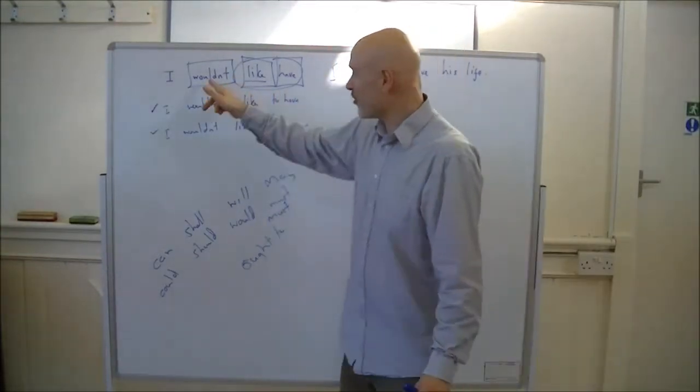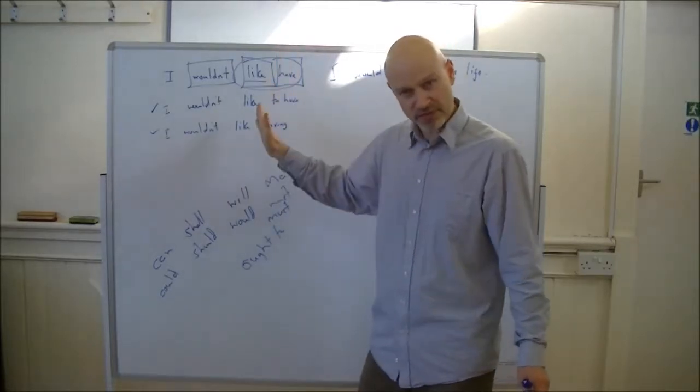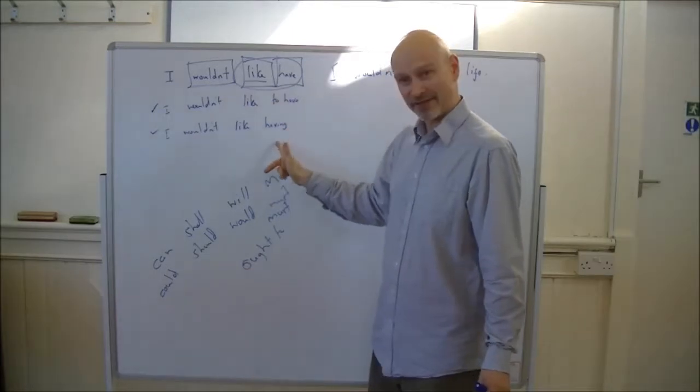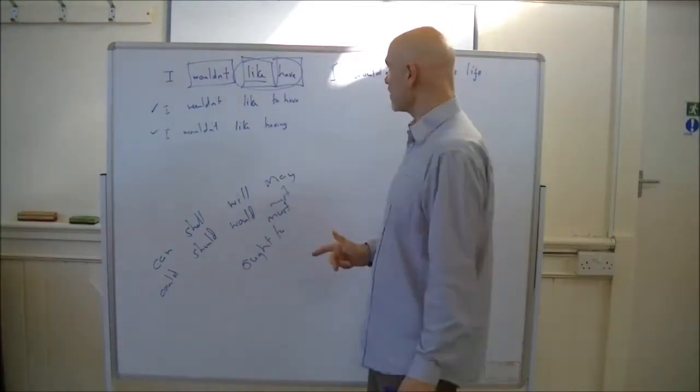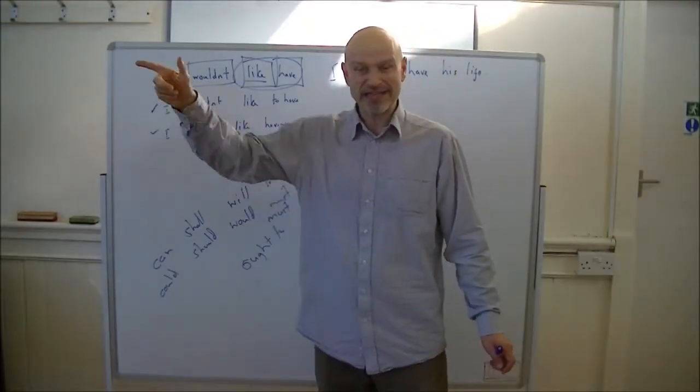Yeah, the verb pattern after wouldn't is present simple first person. The verb pattern after like is either to have or having.